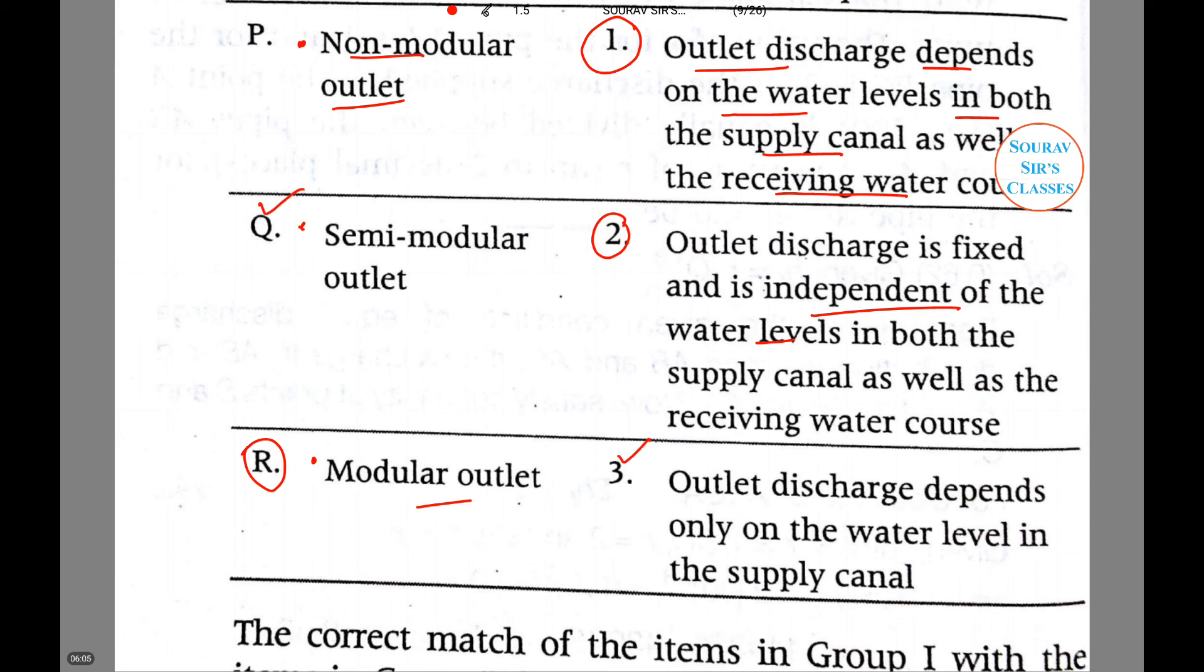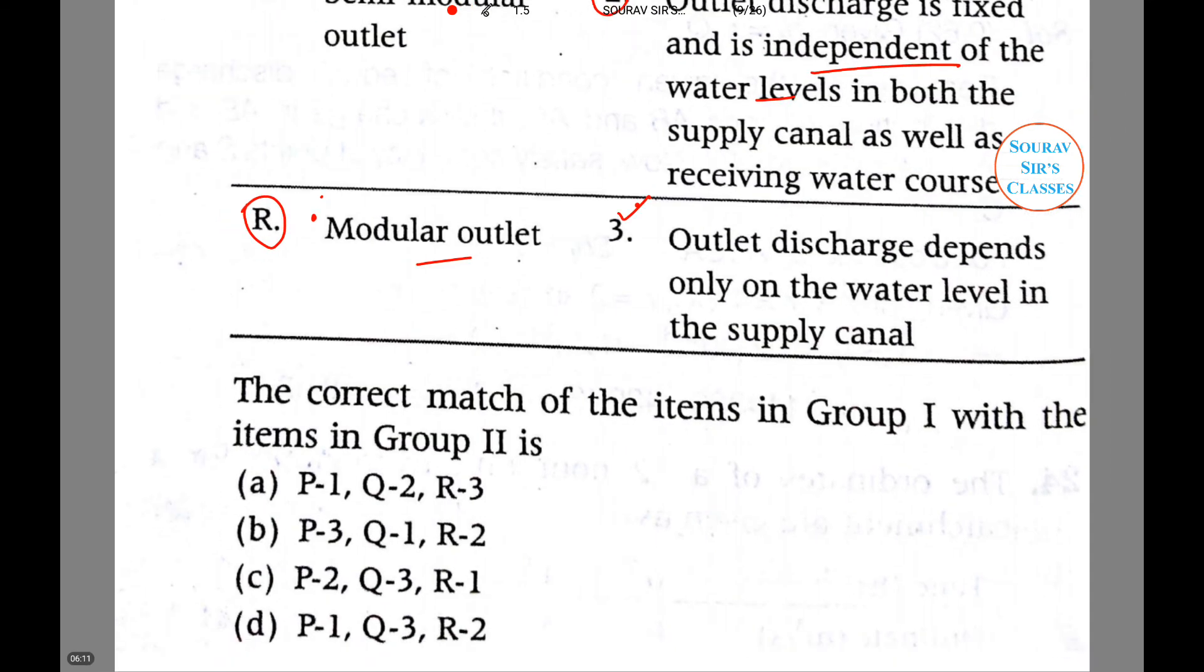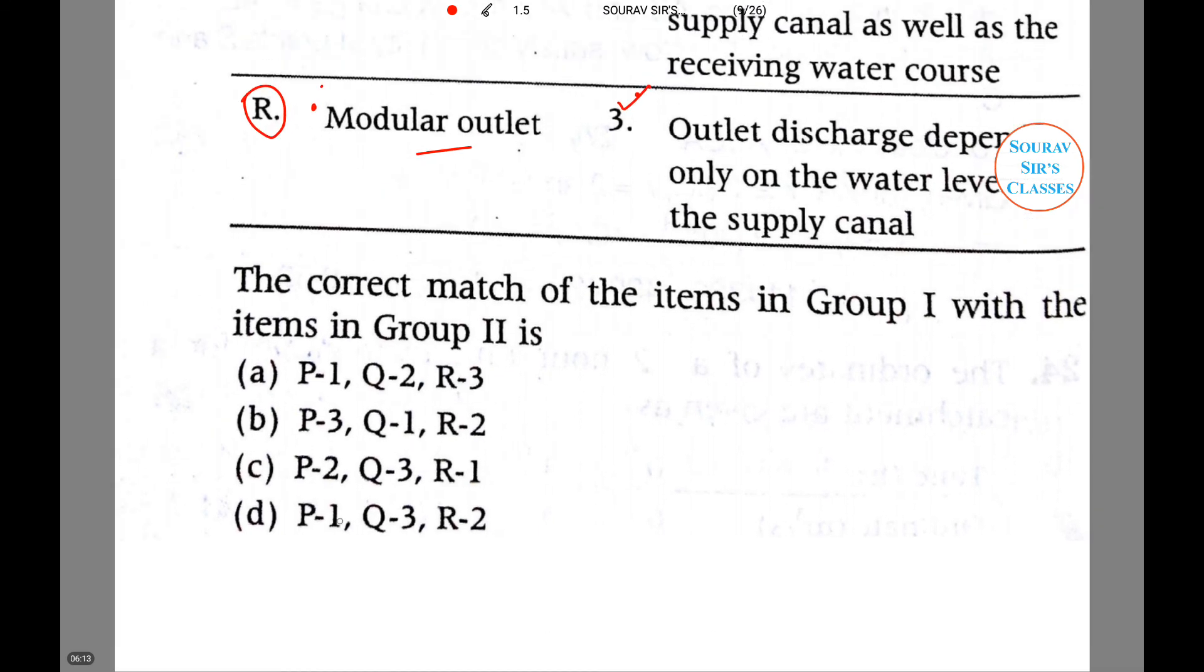So we have the combination P-1, Q-3, R-2. P-1, Q-3, R-2—option D will be the correct answer for this particular question.